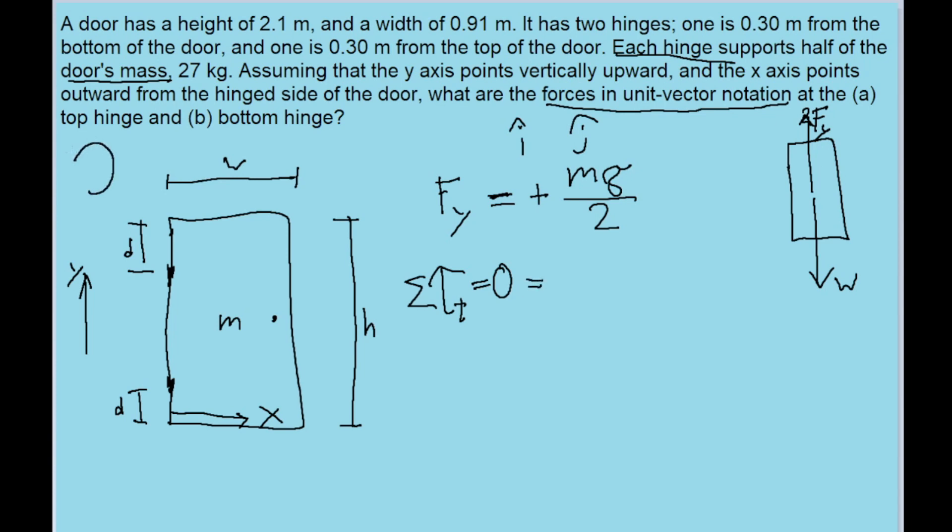I'm also going to define counterclockwise rotations to be positive. So treating the top hinge as our axis here, there are going to be two sources of torque. There's the torque from the bottom hinge pushing on the door, which, using my coordinate definition here, would be a positive rotation. And then there's also the weight of the door pushing, pulling down on it, which is going to be a negative rotation.